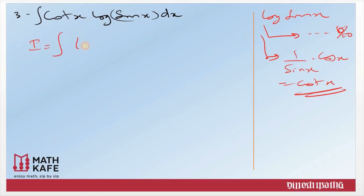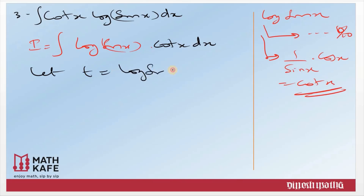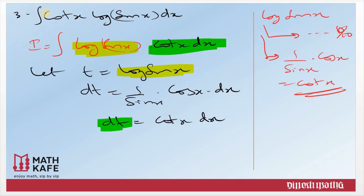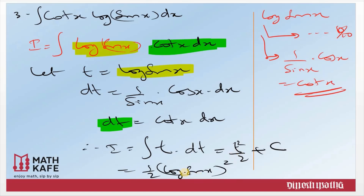Rewrite the question as log(sin x) into cot x dx. Let t equal to log(sin x) and differentiating: dt equals (1/sin x) · cos x · dx, which is cot x dx. Now log(sin x) is replaced by t and cot x dx is replaced by dt. Therefore the question becomes I equal to integral of t · dt. The integral of t is t²/2 plus C. Substituting back: (log(sin x))² / 2 plus C. That is our answer.